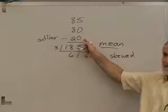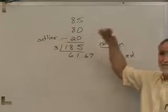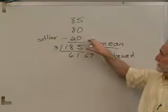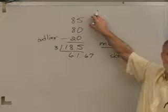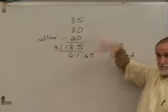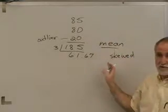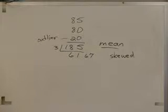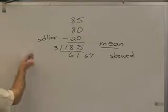In other words, one bad score, if you only have a few, can pull the mean way down. Conversely, if someone made two 20s and then made 100, that one good score would pull the average way up, would pull the mean up. Let's look at another example that maybe is a little more fun to think about.